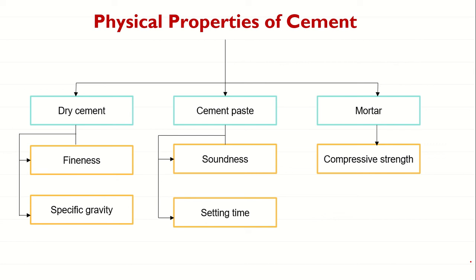The three forms are: dry cement, cement paste, and mortar. For dry cement — the cement powder — we can perform two tests: the fineness test and the specific gravity test. For cement paste, we can determine properties like soundness and setting time.